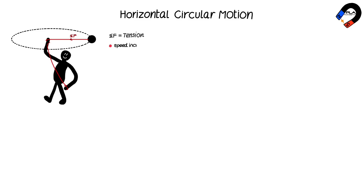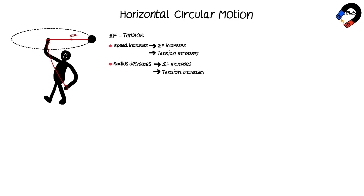If the speed increases, the resultant force and tension increase, with mass and radius remaining constant. If the radius decreases, the resultant force and tension increase, with mass and speed remaining constant. If the mass increases, the resultant force and tension increase, with speed and radius remaining constant.